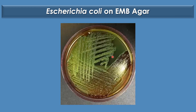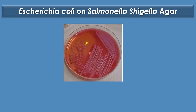This plate shows E. coli on EMB agar or eosin-methylene blue agar, which is widely used as a selective medium for the cultivation of E. coli. This plate shows E. coli on Salmonella-Shigella agar, where E. coli was observed as pink colonies.